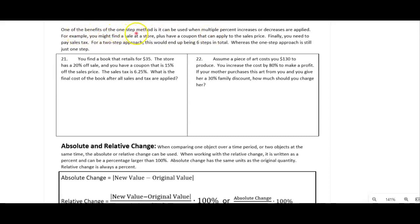One of the benefits of the one-step method is it can be used when you stack multiple percent increases and decreases. For example, a sales price, a coupon, and then paying sales tax. The two-step approach would end up being six steps total, but in the one-step approach, it's still just one step. So let me demonstrate the one-step approach on multiple percent decreases.